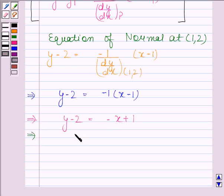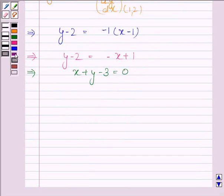This implies x plus y minus 3 is equal to 0. Hence our required equation is x plus y minus 3 equals 0.